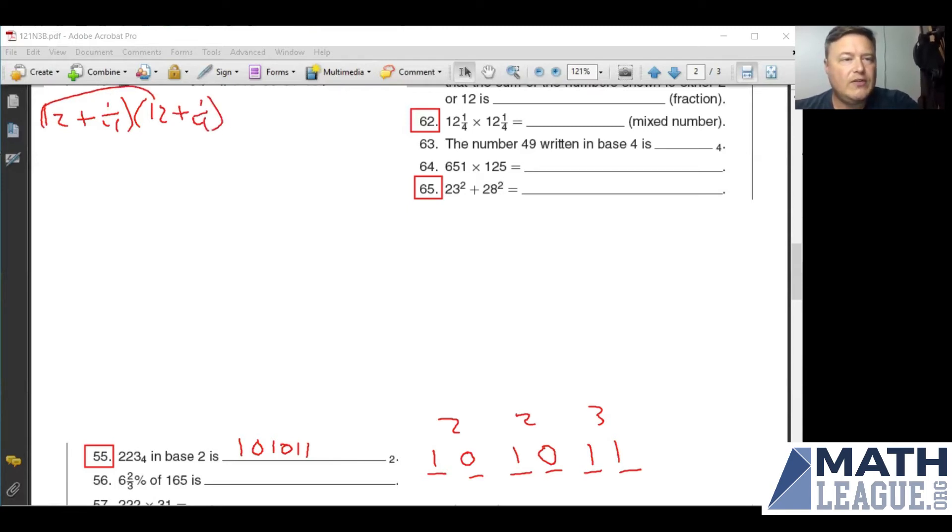12 times 12 is 144, and I'm going to take 12 times a fourth and another 12 times a fourth. A fourth of 12 is three, right? And I've got a three in the middle and a three on the outside, so that's an extra six. And then the final thing is a fourth times a fourth, which is one sixteenth. So 144 plus six is going to be 150. And then one sixteenth, I just write that here.